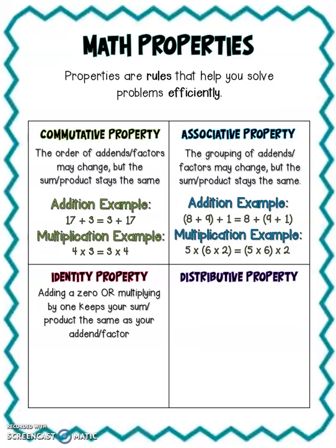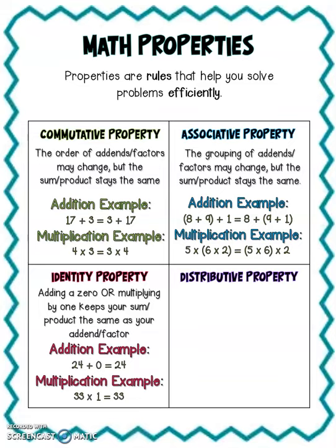So 24 plus 0 is 24 because the only way we can keep that addend to stay a 24 is by adding nothing to it. And 33 times 1 stays 33 because the only number we can multiply by and keep our answer the same is 1.